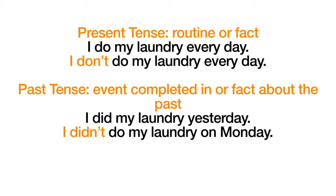But in the past tense, we talk about an event completed in or a fact about the past. So we could say: 'I did my laundry yesterday' — past tense. And if we wanted to use 'I didn't': 'I didn't do my laundry on Monday.' Compare: 'I don't do my laundry every day' and 'I didn't do my laundry on Monday.'